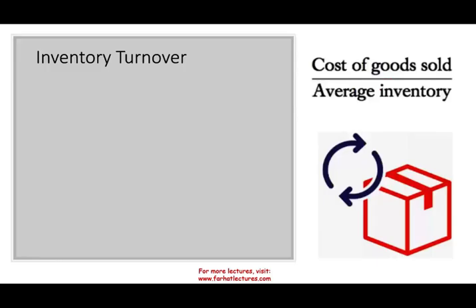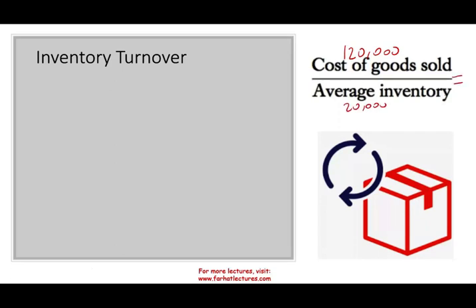The next topic is inventory turnover. Inventory is a current asset just like accounts receivable, and inventory precedes accounts receivable — before we have an account receivable, we have inventory. So we want to know how fast we are turning over our inventory. Using simple numbers: if cost of goods sold is $120,000 and average inventory is $20,000, the inventory turnover is 6 times.